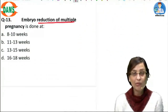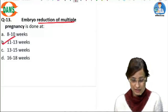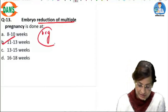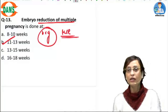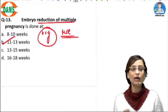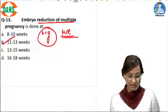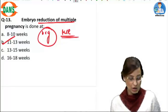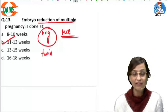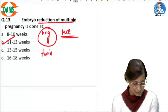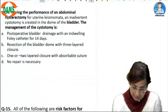Embryo reduction for multiple pregnancy is done at 11 to 13 weeks under ultrasound guidance, where KCl is injected into the thorax of the fetuses. This is done when there are multiple babies and you want to improve pregnancy outcomes. You reduce to twin pregnancies — you never reduce to a singleton.